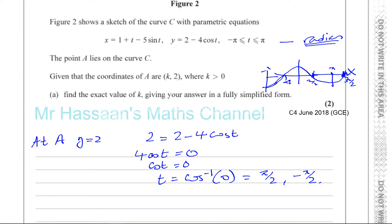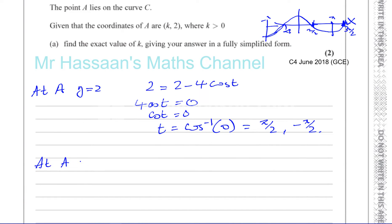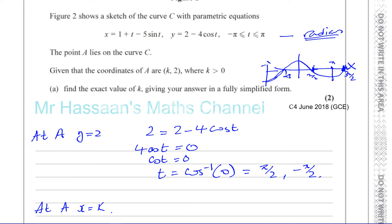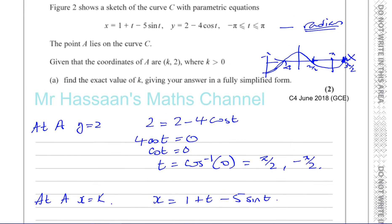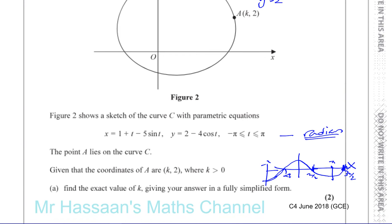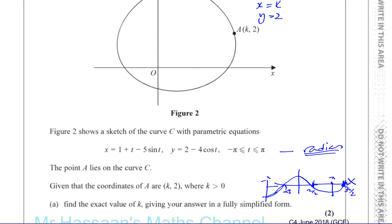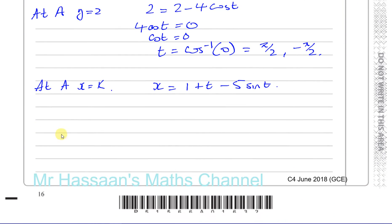At point A, x equals k. Using x equals one plus t minus five sine t, we need to try both values of t. If t equals minus pi over two, the x value will be positive. If t equals pi over two, we may get a negative x — let's check both since k must be positive.